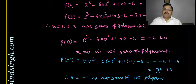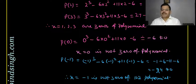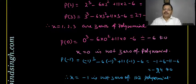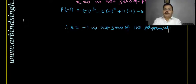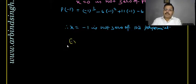If you replace x by a constant and the polynomial becomes zero, then that constant is a zero of the polynomial. If it does not become zero, it is not a zero. Now let's solve some questions from Exercise 2.2 from the NCERT.